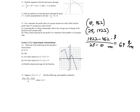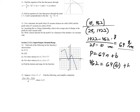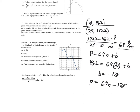Now we write the linear profit function P as a function of n, the number of vacuums sold. Using P = 64n + b and plugging in the point (10, 462): 462 = 64(10) + b, giving b = negative 178. The final equation is P = 64n minus 178.